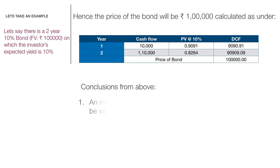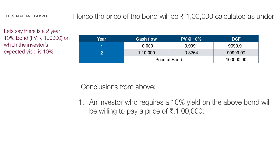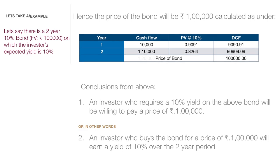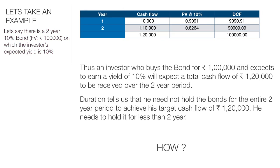What are the conclusions we can draw from this? The first conclusion is that an investor who requires a 10% yield from this bond will be willing to pay a price of 1 lakh rupees. Or in other words, an investor who buys the bond for a price of 1 lakh will earn a yield of 10% over the two-year period. If you look at the table, the sum total of the cash flow is 1 lakh 20,000, which is what we call the targeted cash flow — the investor expects to receive 1 lakh 20,000 rupees over a period of two years.